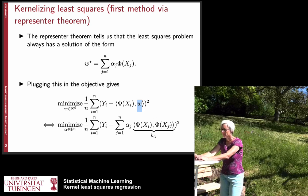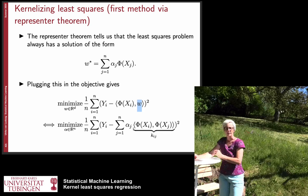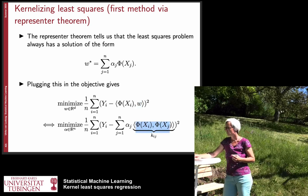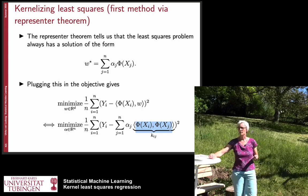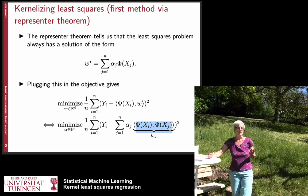Now we plug in the sum and we can again pull out the linear coefficients and the sum from the scalar product and we are left with an expression that just contains the scalar product between two input points. And this expression we can replace by a kernel kij.